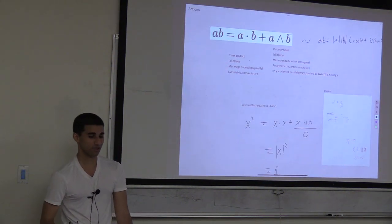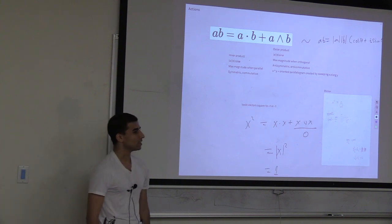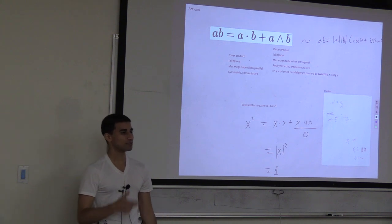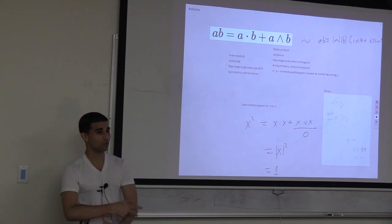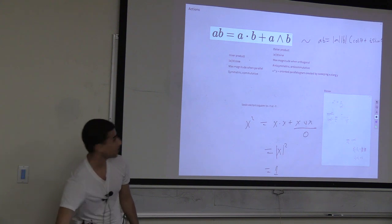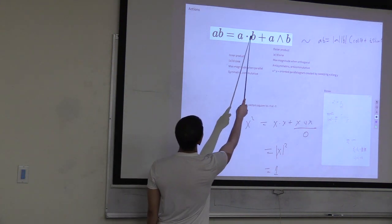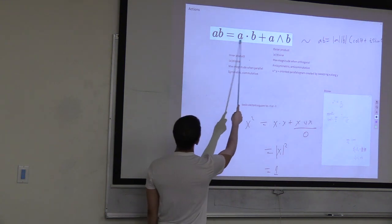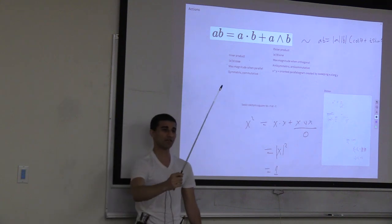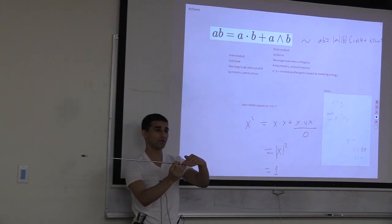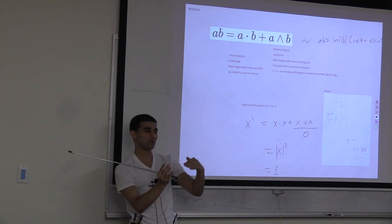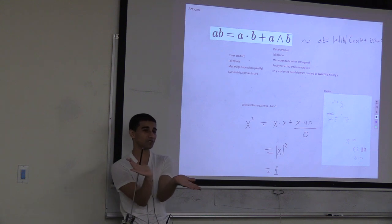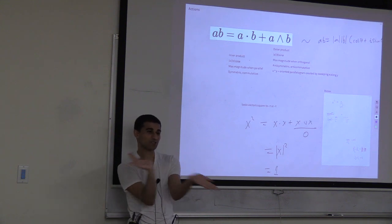This is the basic operation. Space itself splits into a symmetric and an anti-symmetric part. The symmetric part is the dot/inner product - swap the two arguments and a·b = b·a. It corresponds to the similarity of things: the cosine of zero is one, so the dot product is maximized in magnitude when things are parallel.